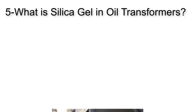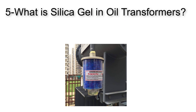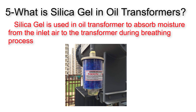What is Silica Gel in oil transformers? Silica Gel is used in oil transformers to absorb moisture from the air sucked in by the transformer during the breathing process. This moisture is dangerous to the insulation characteristics of the oil inside the transformer.